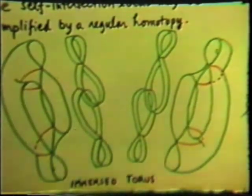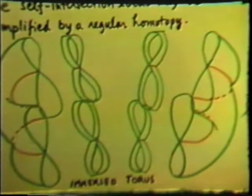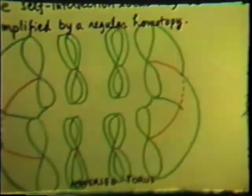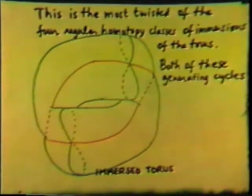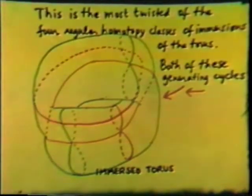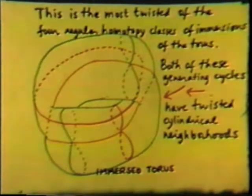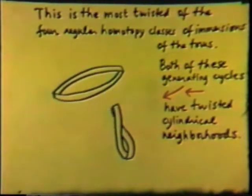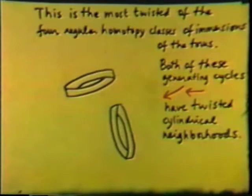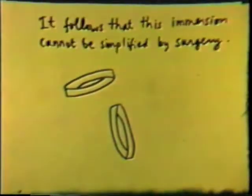The central portions are cut away for easier seeing. We reassemble the surface now. This is the most twisted of the four regular homotopy classes of immersions of the torus. Both of these generating cycles have twisted cylindrical neighborhoods; they both have one complete twist. Consequently, this immersion may not be simplified by immersion cobordism.